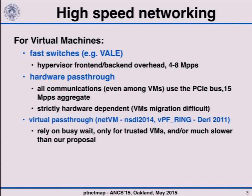In virtual machines, network function virtualization tries to move middleboxes, firewalls, and so on inside virtual machines. Virtual machines are usually connected with each other with software switches. In our group, we developed a fast software switch based on the NetMap API called Vale, which achieves, for short packets, a throughput of 4-8 million packets per second between two virtual machines. But it's still far from what the same switch can do between applications running on the host, which is 20 million packets per second.